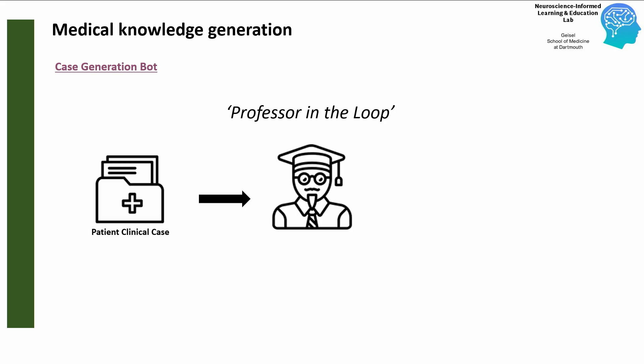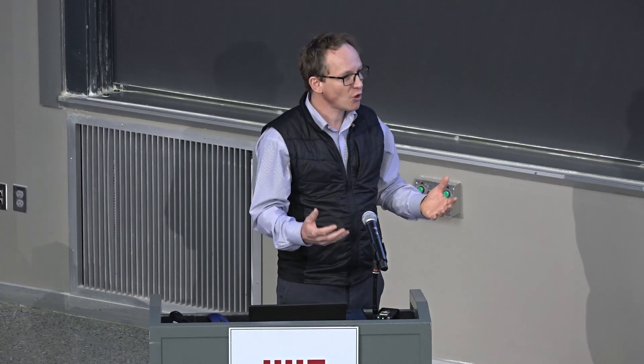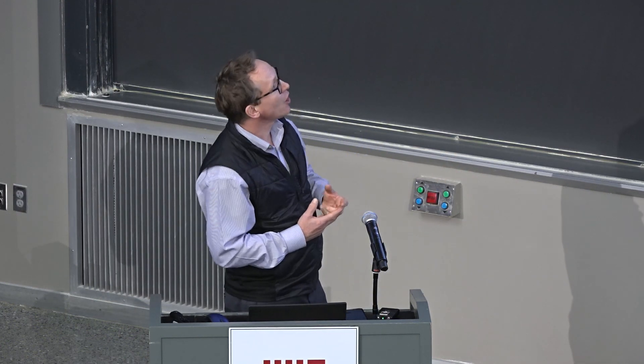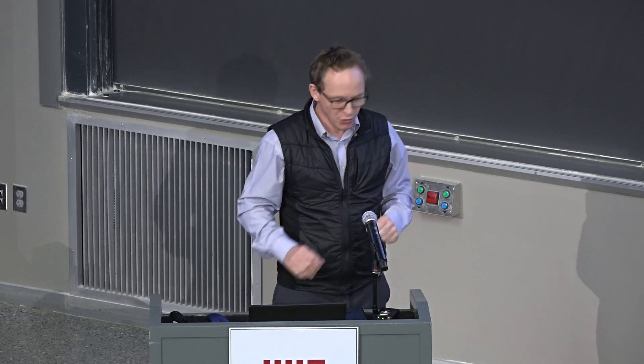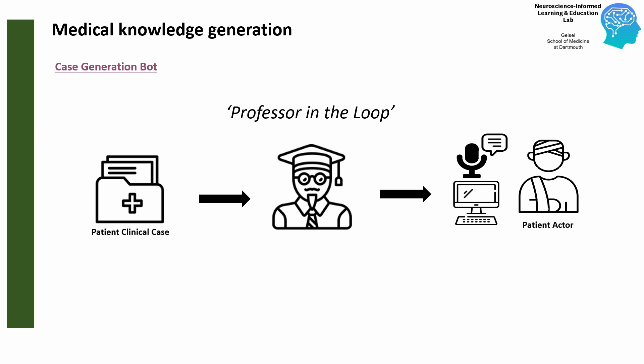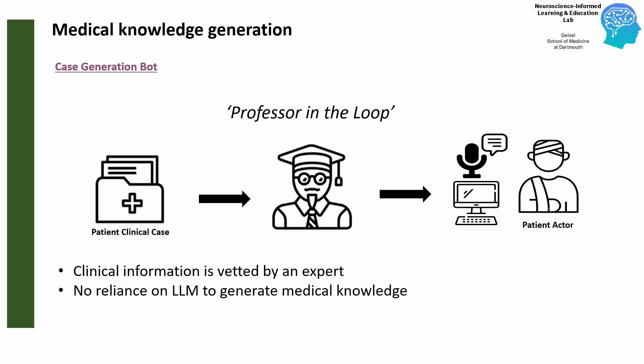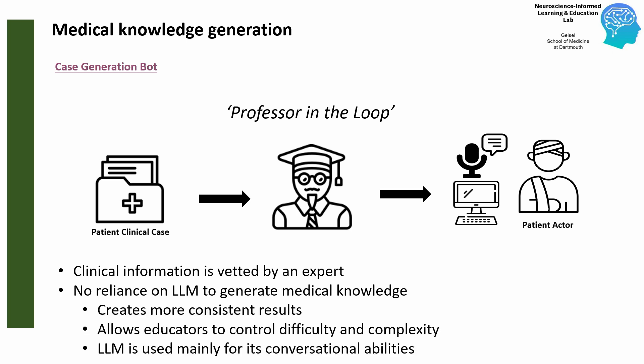The key concept is that with patient clinical cases, we don't want ChatGPT to create medical knowledge, which might be faulty or biased. So we always have the professor in the loop — or the human in the loop — before it goes to the patient actor. The clinical information is always accurate and vetted by an expert. We tried relying on the LLM at first, but it didn't create reliable results and didn't give us the control over cases we wanted. So we only leverage the LLM for its conversational abilities.